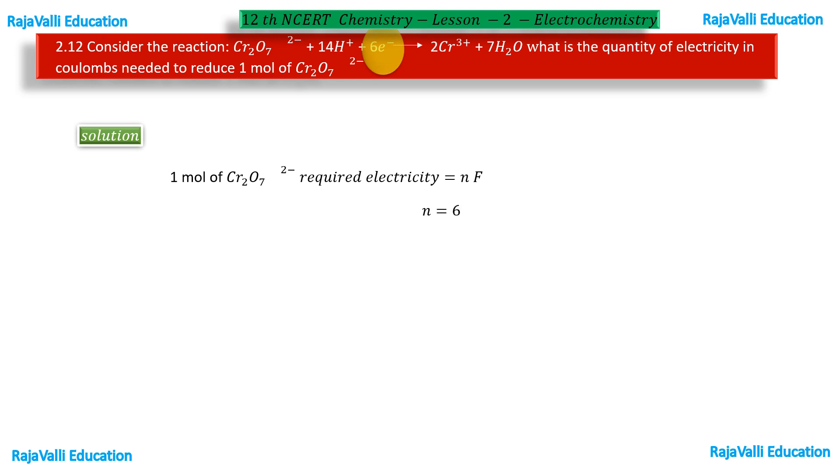Substituting these values in this equation, we will get 6 times 96,500 which equals 579,000 coulombs. So 579,000 coulombs of electricity is needed to reduce 1 mole of dichromate ion.